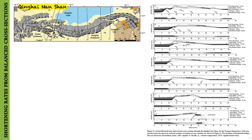In order to reconstruct Cenozoic deformation across the Qinghai and Gonghe-Nanshan, they developed a series of balanced cross-sections and measured the line-length shortening recorded along each. The deformed-state and restored cross-sections are shown in Figure 11, and the location of transects is shown in Figure 4.